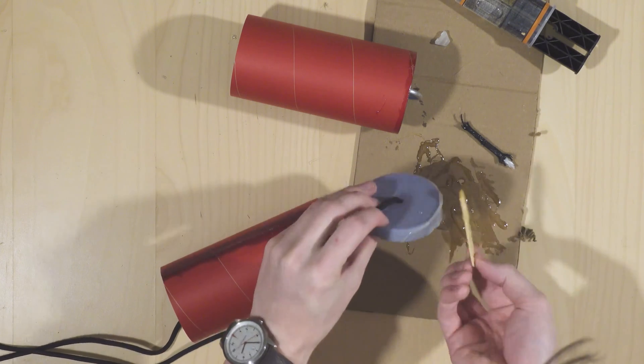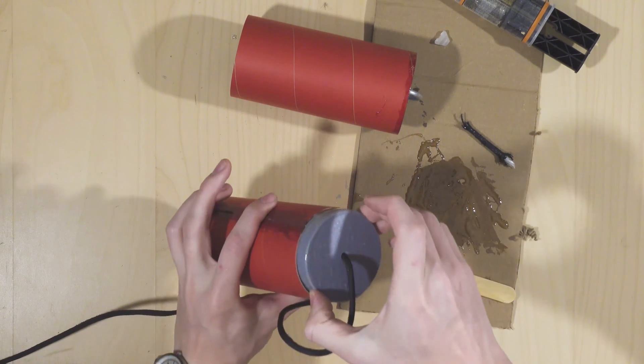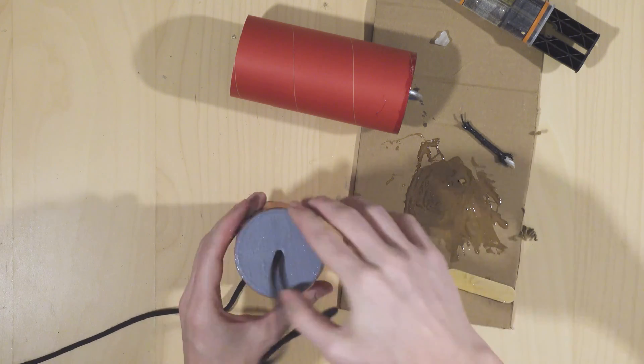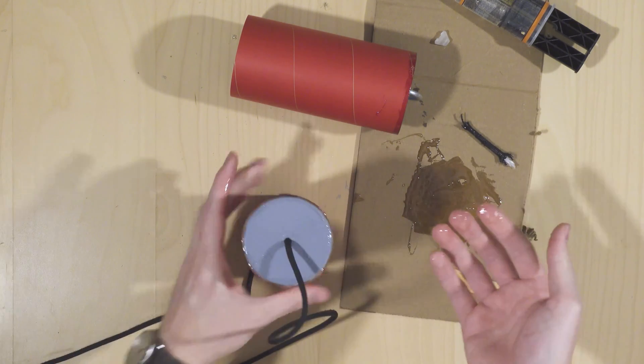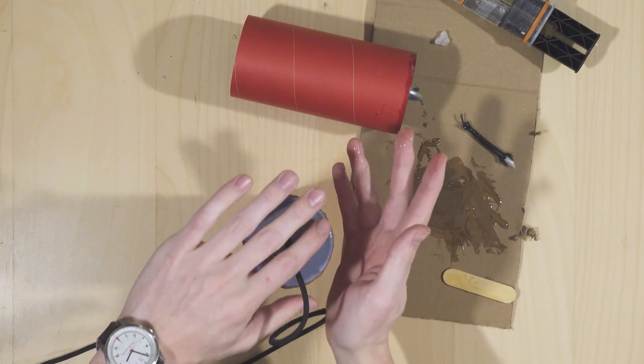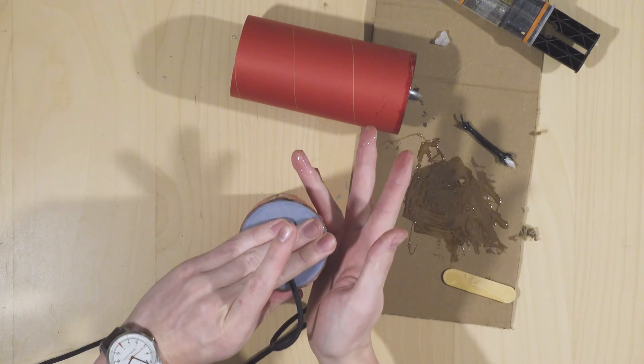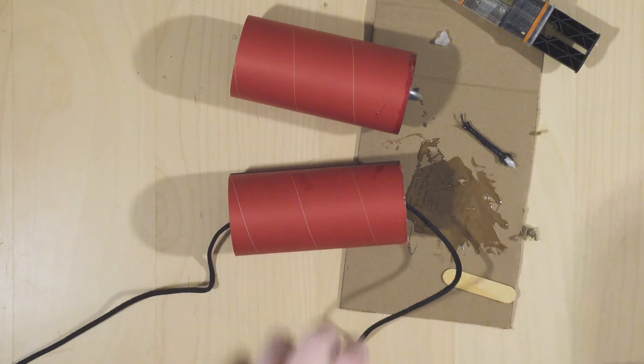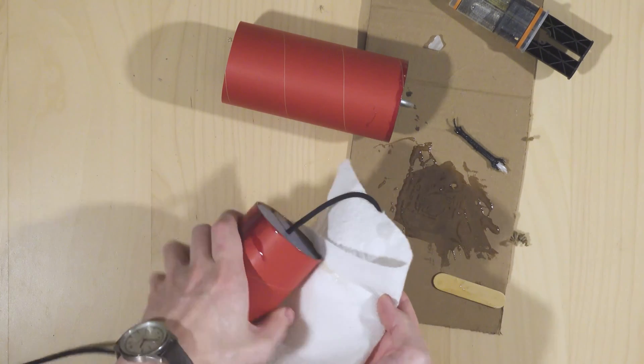I then repeated a similar process with the piston head and the piston. This time, not only did I apply too much epoxy, but I also got it all over my hands. If you build this yourself, I recommend being more careful than I was because getting epoxy on your hands is not that much fun. With the pieces now in place, you can wipe off any extra epoxy before setting them down to dry.